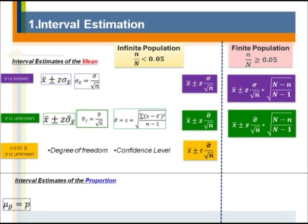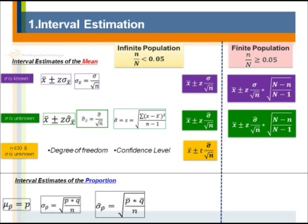For the proportion, we do not use mu anymore — we use p. The standard error is sigma p-bar, which comes from the square root of p times q divided by the sample size. If you don't know the population proportion p or population q, you can use the sample proportion p-bar and q-bar as estimates to get the estimated population standard error. Then you construct the interval using the sample proportion plus and minus the z-score times the standard error.